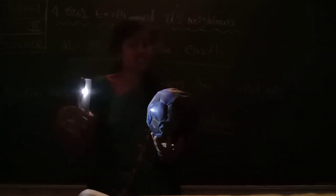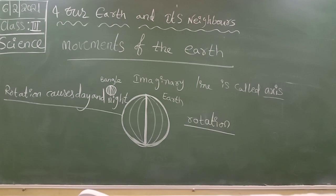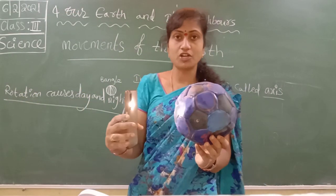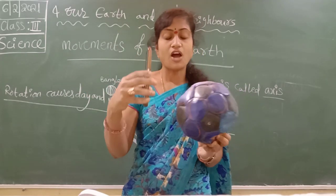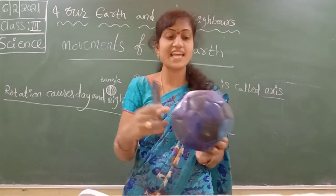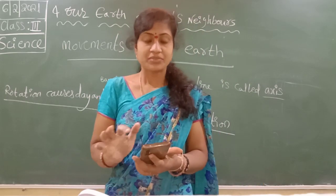As the Earth rotates from west to east, only half of the Earth faces the sun. The half which gets sunlight — that is called day. The remaining half which does not get sunlight — that is the night. Like that, the days and nights are formed.